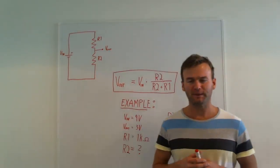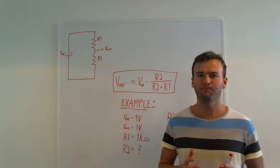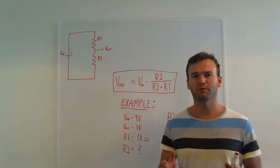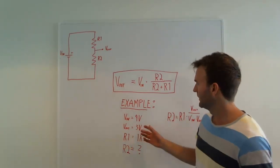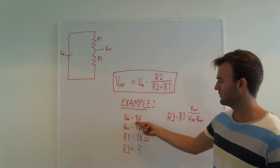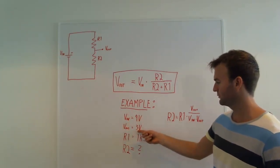Let's look at an example. Let's say we have a 9 volt battery and we want 3 volts output. That means V input is 9 volt, V output is 3 volts.